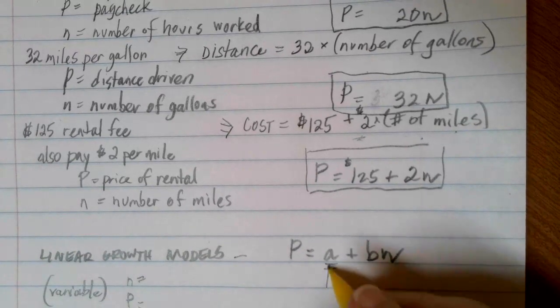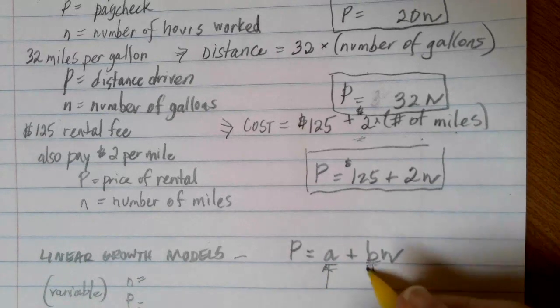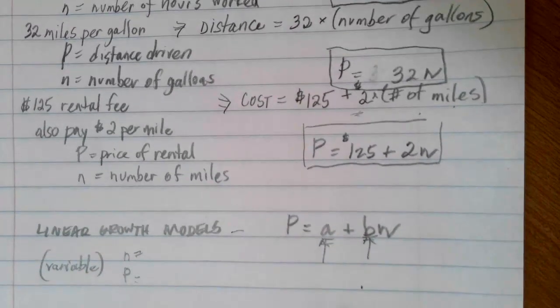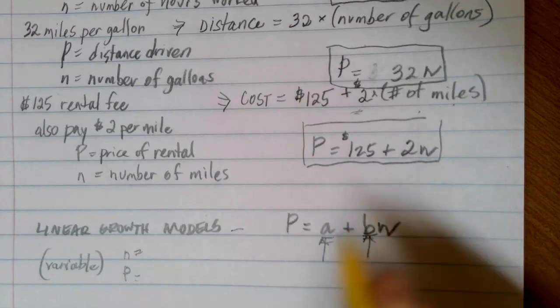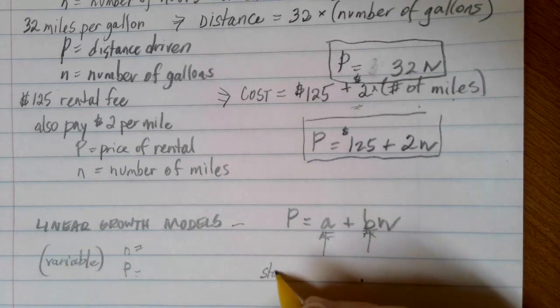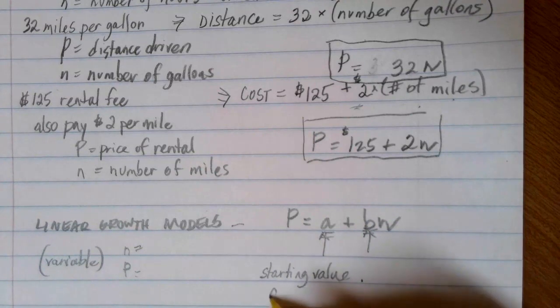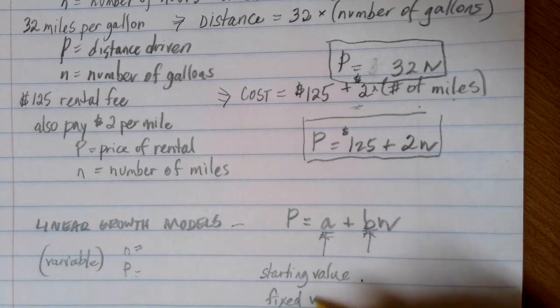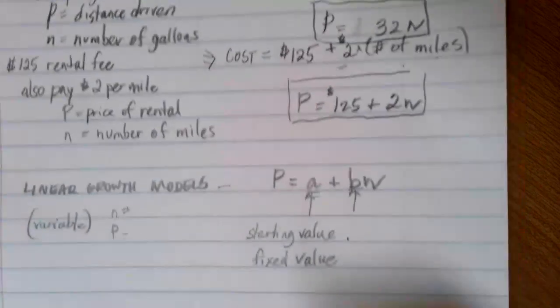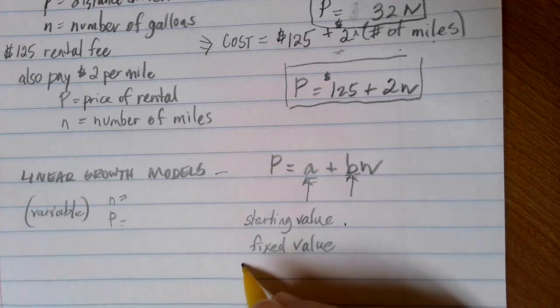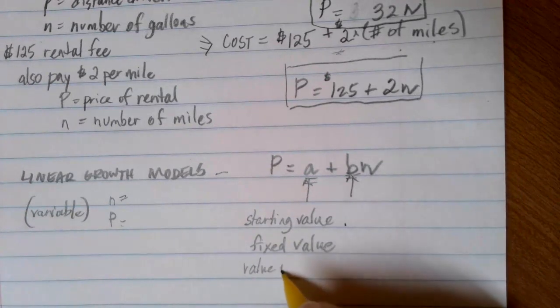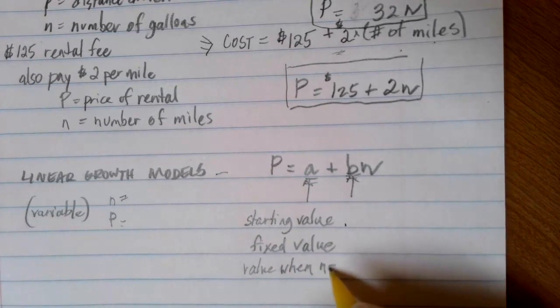The A and the B are going to be specific for any situation that you start with. But the A value is going to be equal to a starting value or a fixed value. If you want to be fancy, you can think of it as the value when N is equal to zero.